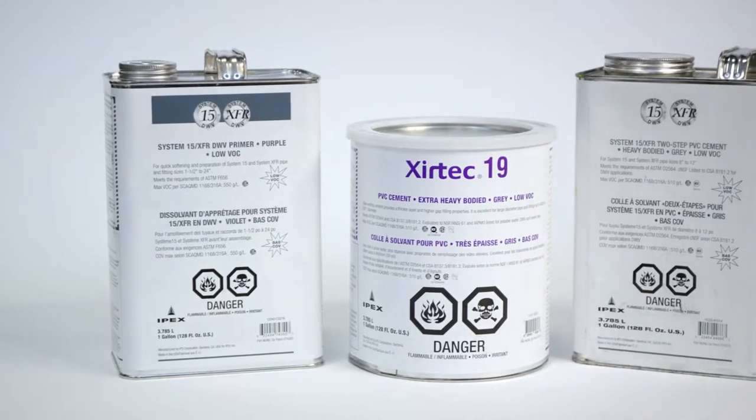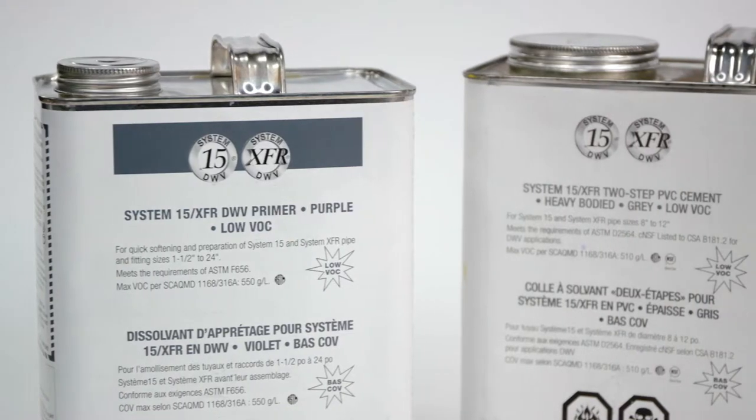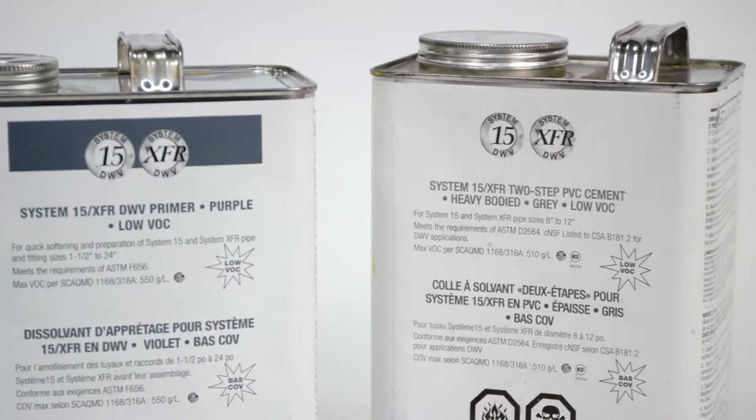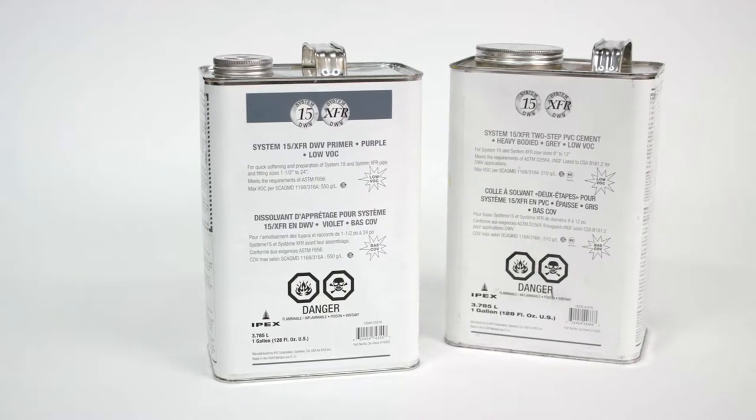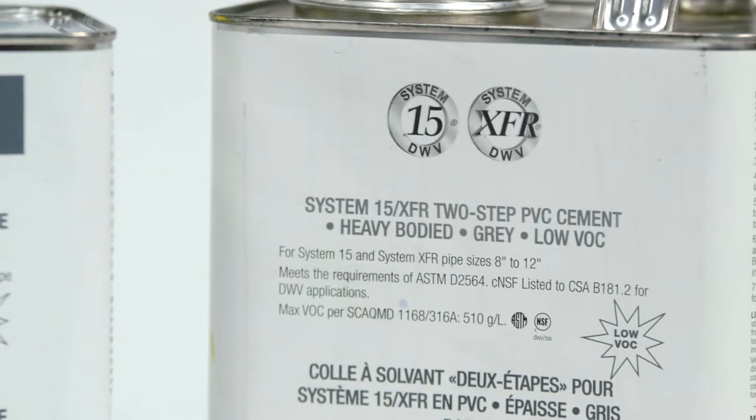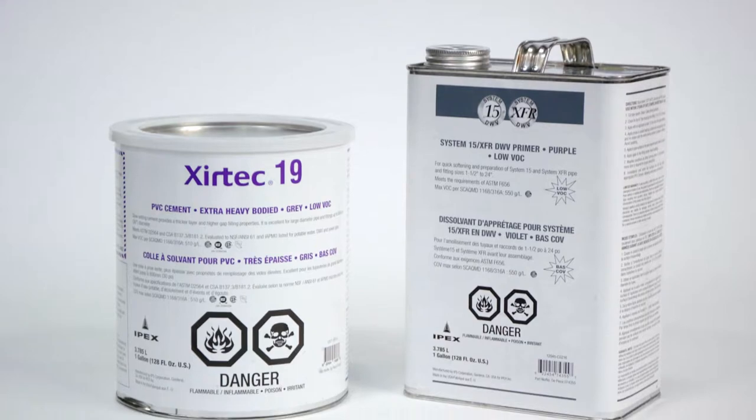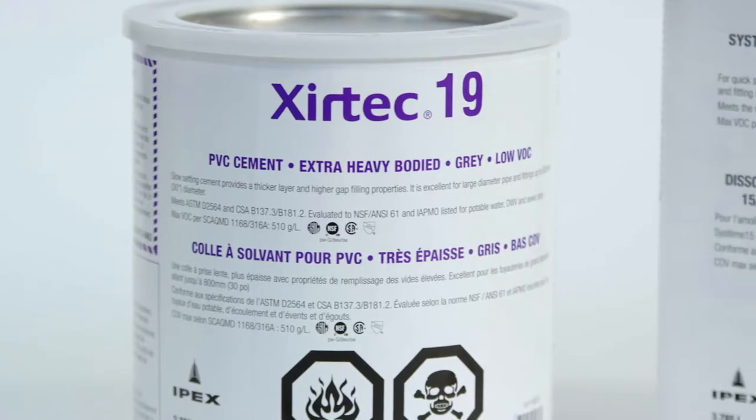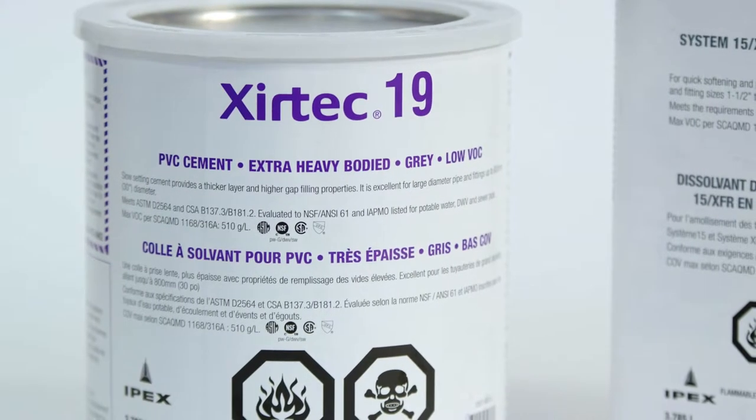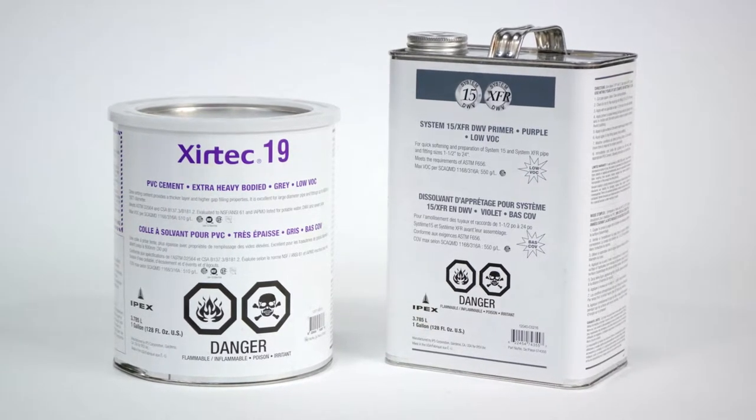Use only primer and solvent cements in accordance with IPEX instructions. Specifically, for sizes 8 inches through 12 inches, IPEX recommends using System 15 XFR primer in conjunction with IPEX System 15 XFR two-step cement. For sizes above 12 inches, the recommended cement is Zyrtec 19 industrial PVC cement with the same System 15 XFR primer.